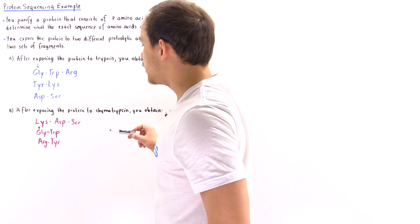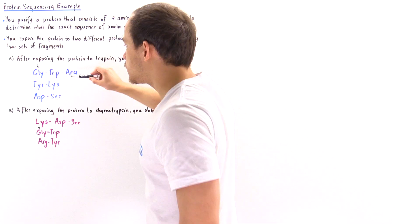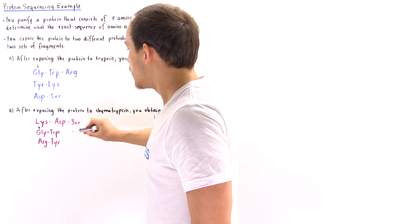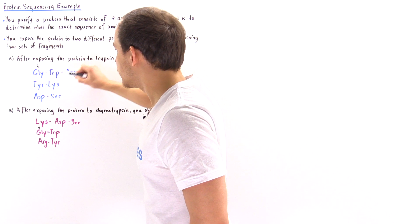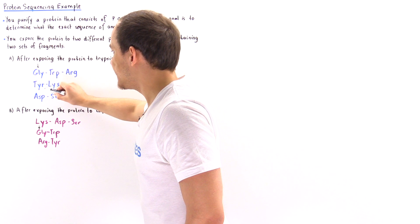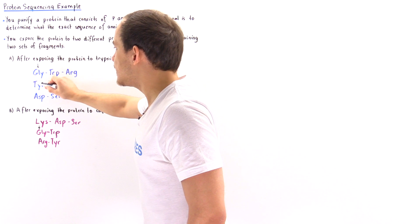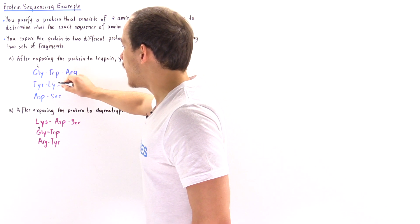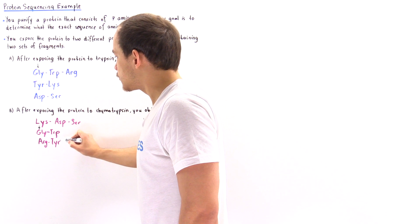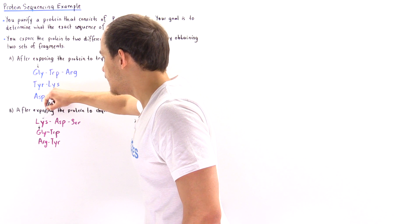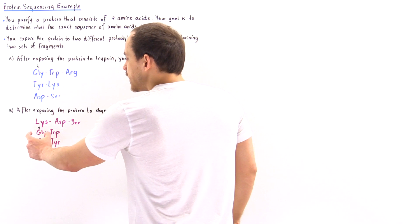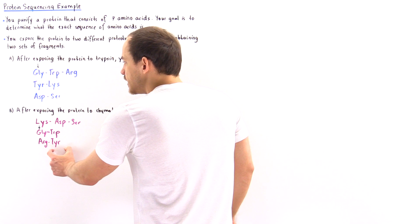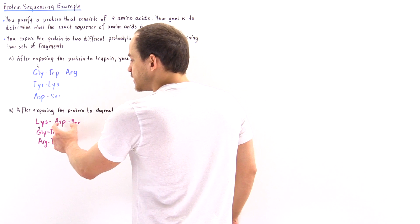The next question is what comes after tyrosine. Going back to experiment one, tyrosine appears in fragment two as tyrosine-lysine. The only time lysine appears in that set is in that fragment, so we conclude the sequence continues as glycine-tryptophan-arginine-tyrosine-lysine-aspartate-serine.